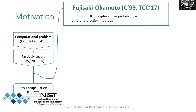By now the Fujisaki-Okamoto transform has also been revisited in the quantum random oracle model, because we are now interested in post-quantum secure schemes. If you take a look at the quantum random oracle model results we've seen so far, there are some things that we found kind of intriguing.